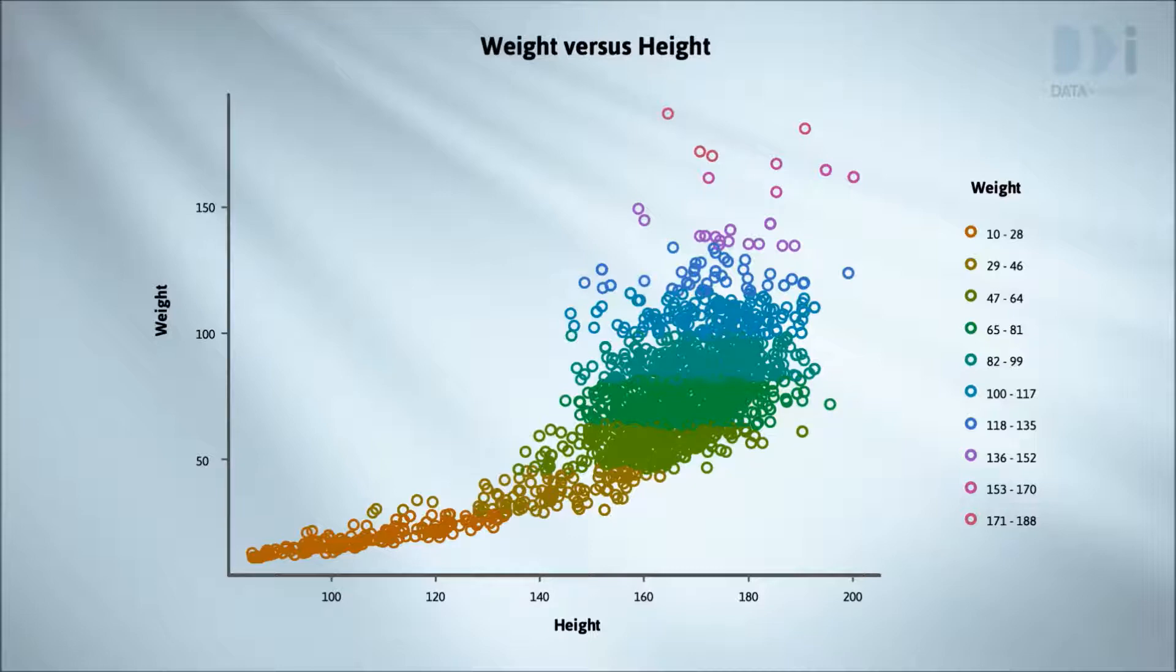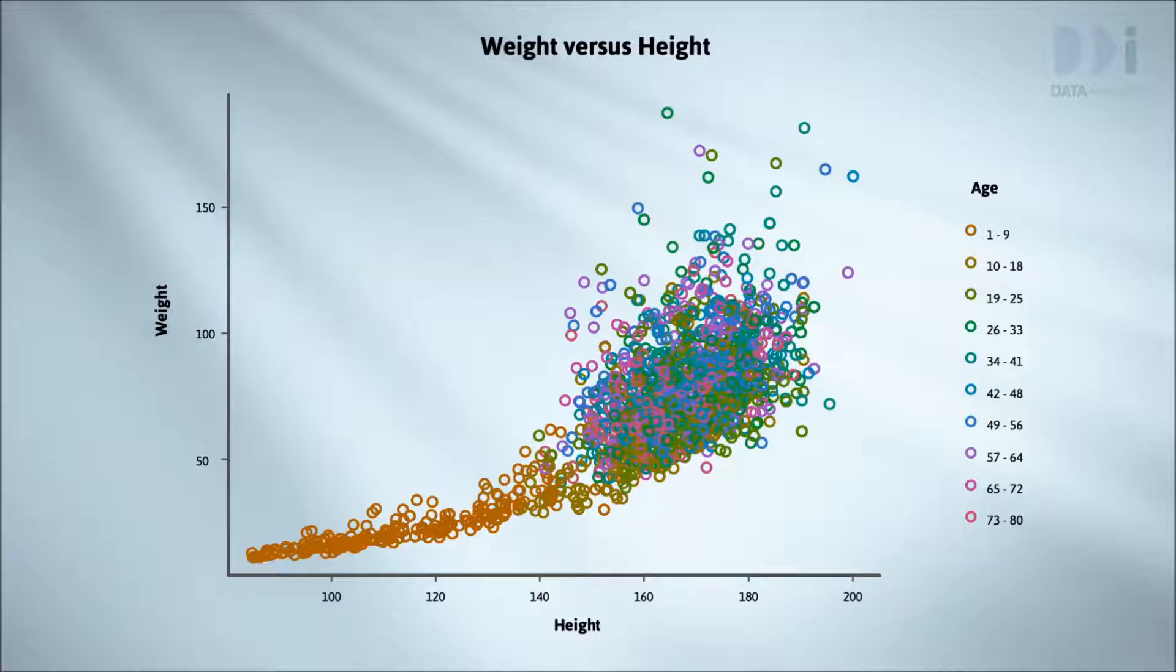In reality, we use color to investigate the effect of a new variable. Here I've used color to see what's happening with age. The age range has been broken into bands. Reading from the legend, they are 1 to 9, 10 to 18, 19 to 25. The colors are shown alongside.